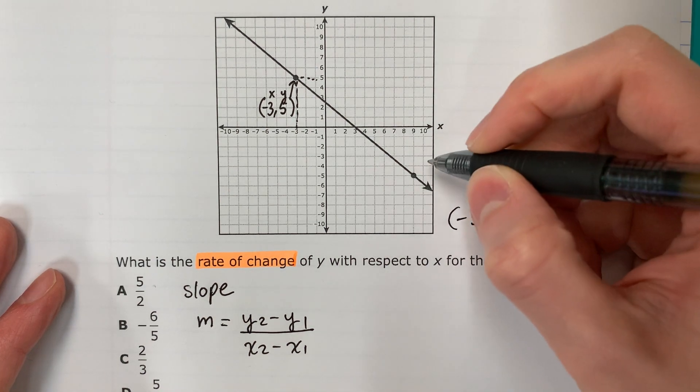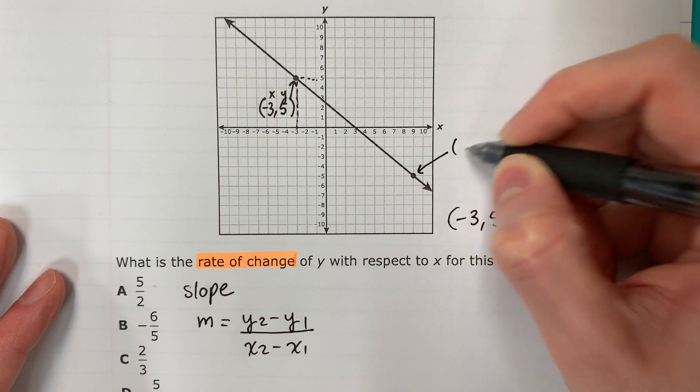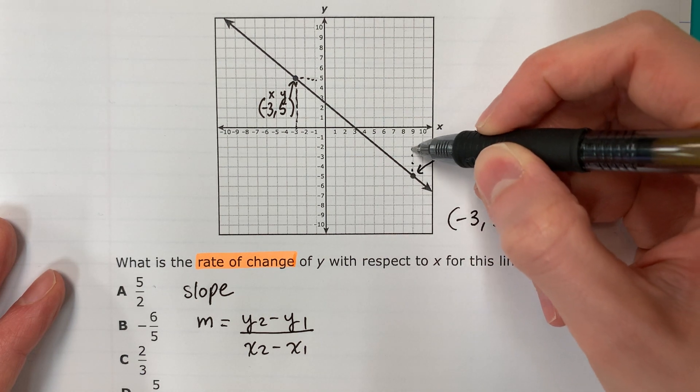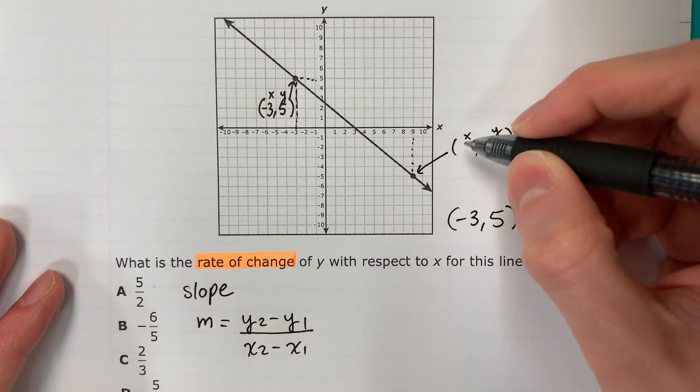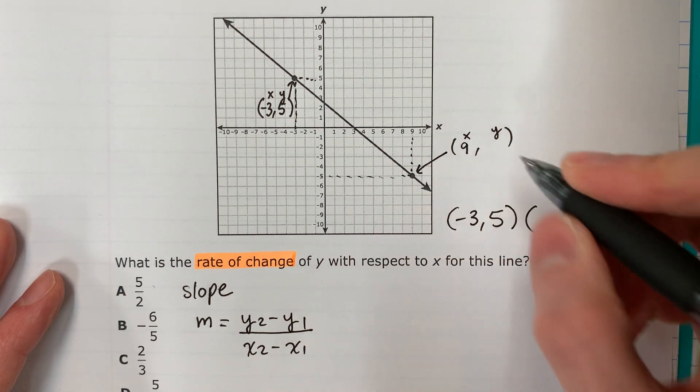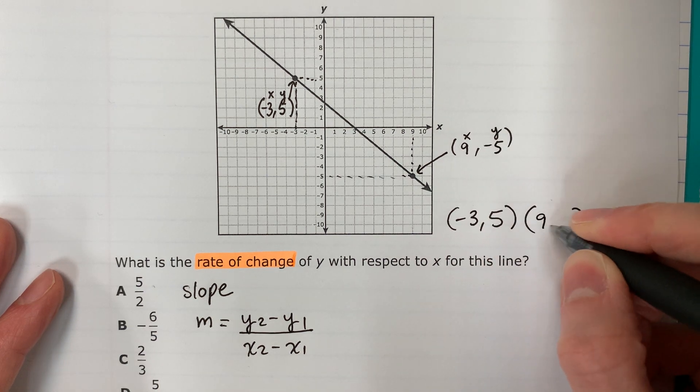And I need one more. I will use this one. x, y. Okay, my x is 9. And my y is negative 5. 9, negative 5.